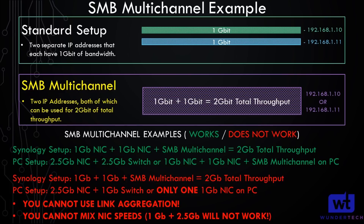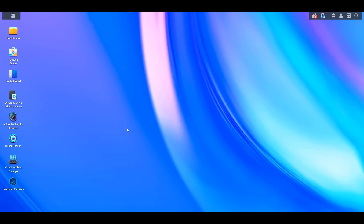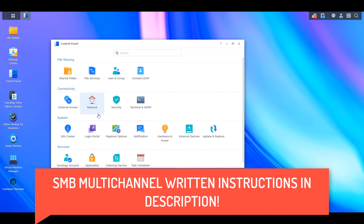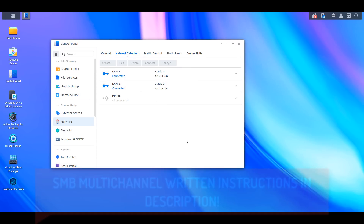The second thing you need to know is that on the NAS side and on the PC side, the NICs have to be the same speed. So if you're using one gigabit NICs, they both have to be one gigabit. Those are really the disclaimers on SMB multi-channel, because the actual setup process is in essence just enabling a checkbox. The key is understanding what network infrastructure between the NAS and the PC is required to actually see the increase in speeds.